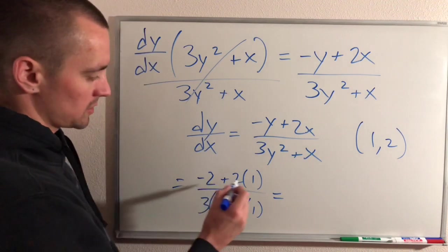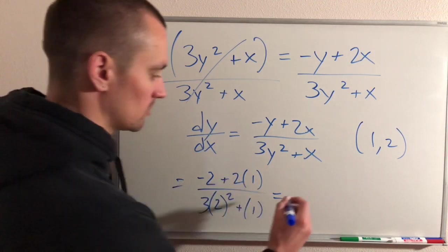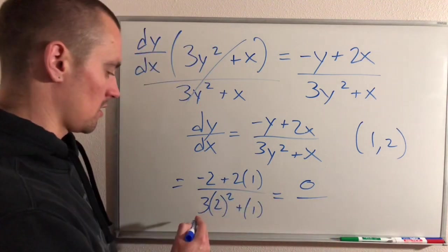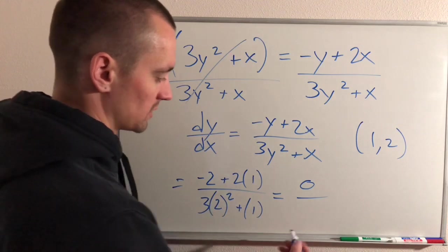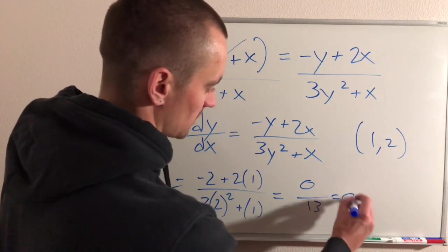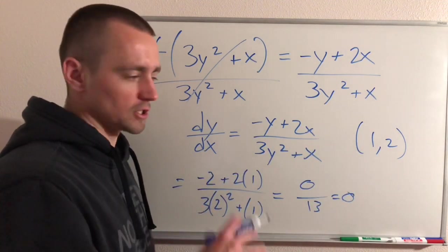Simplifying this, 2 times 1 is 2, 2 minus 2 is 0. And then on the bottom, we're going to end up with 2² is 4 times 3 is 12 plus 1 is 13. But 0 over 13 is just 0. So basically at this point, our slope of our function is 0.